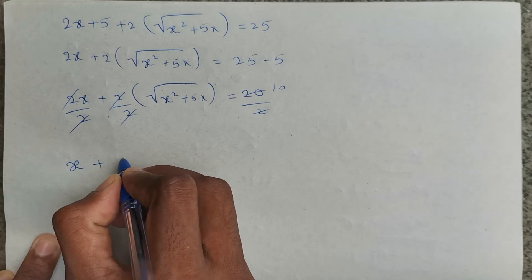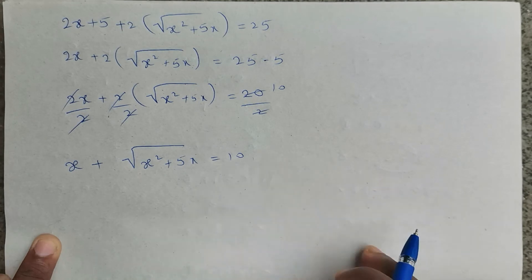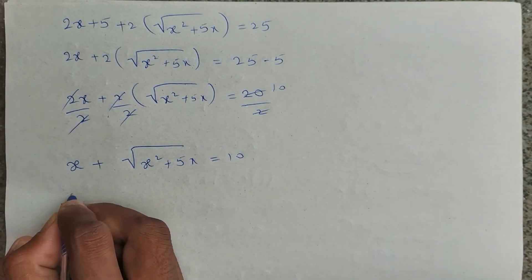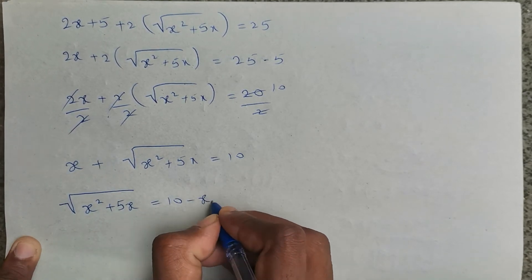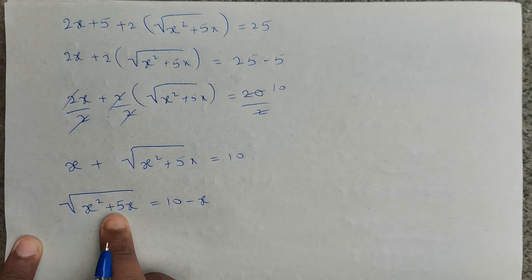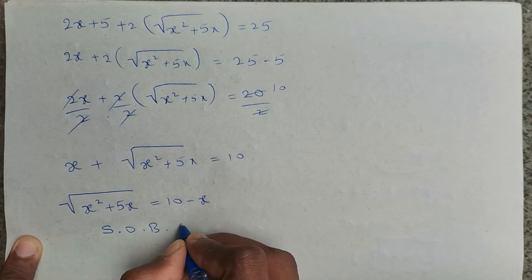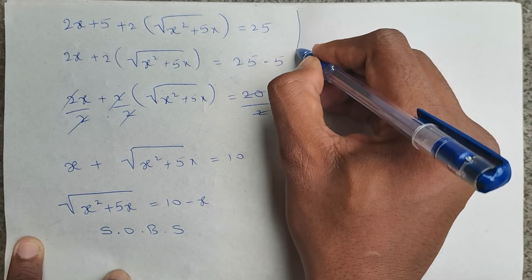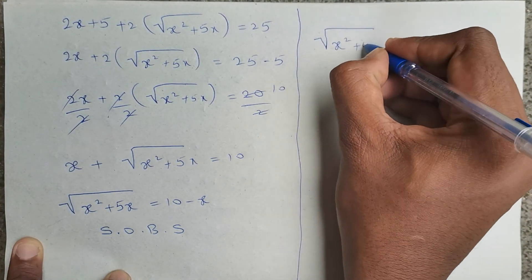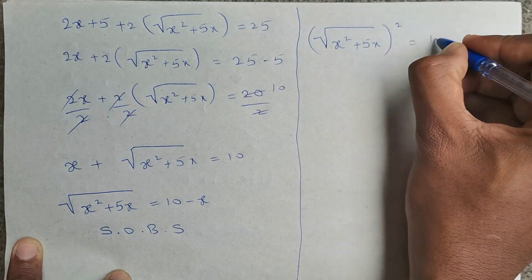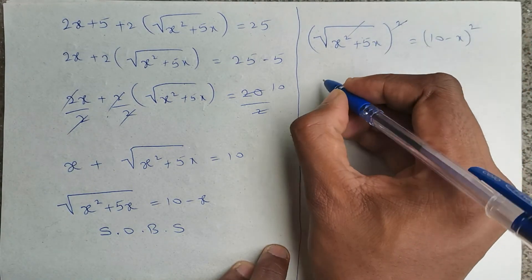Taking x to the right side: root of x squared plus 5x equals 10 minus x. To remove the square root, I will do squaring on both sides, giving root of x squared plus 5x, whole square, equals 10 minus x whole square. The square and square root cancel on the left.